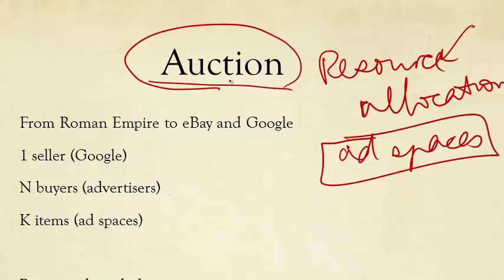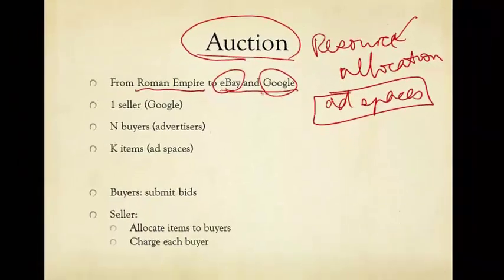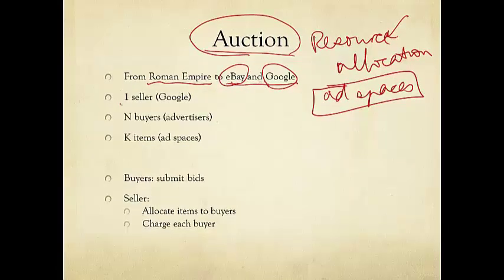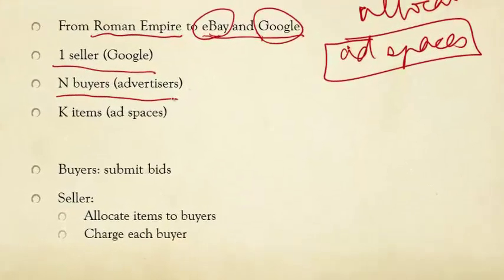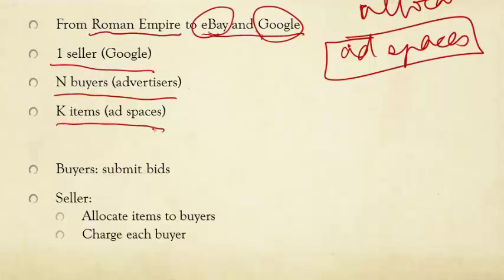In this case, the resource is not signal interference ratio like in last lecture. Resource in this case is the list of advertising spaces. And the allocation mechanism is auction. Now, auctions have been used since over 2,000 years ago. It was used in ancient Roman Empire. And of course, today it's used very heavily on platforms that we all know, like eBay in the U.S. and Google's search sponsored content.